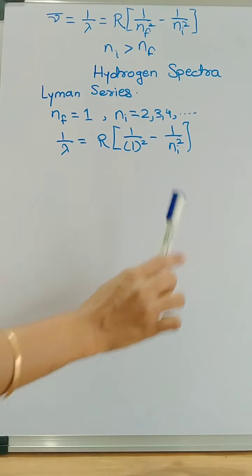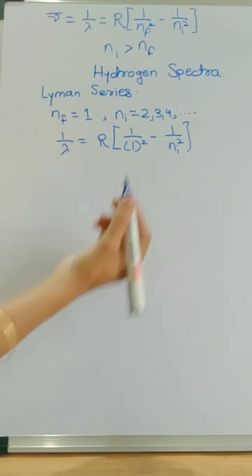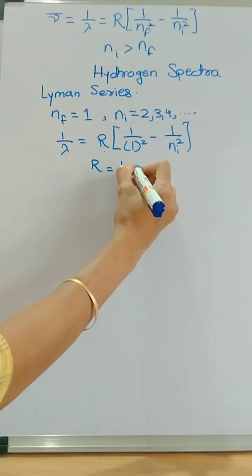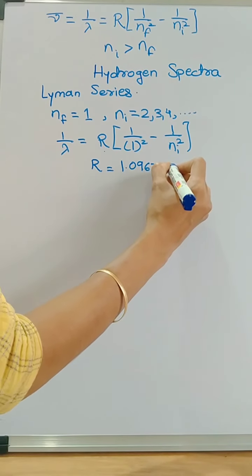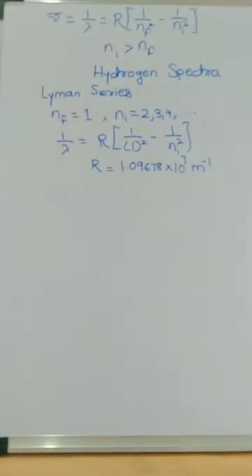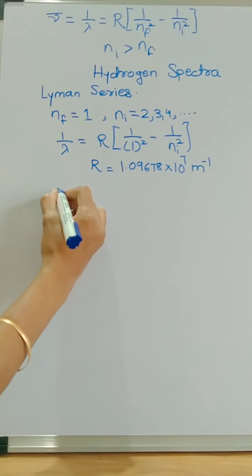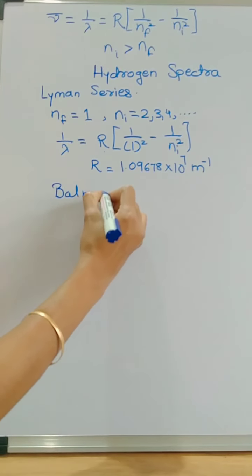For the second orbit it will be 1/2². The value of Rydberg's constant is 1.09678 × 10⁷ m⁻¹. After the Lyman series, in hydrogen spectra, another series is the Balmer series.